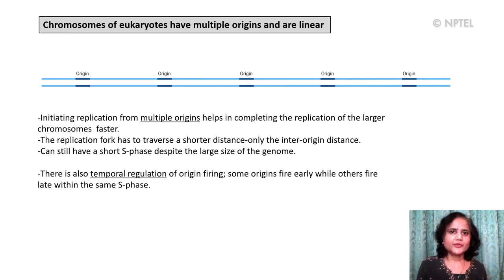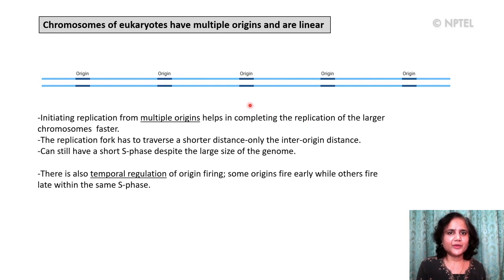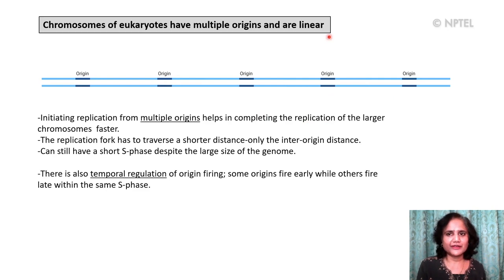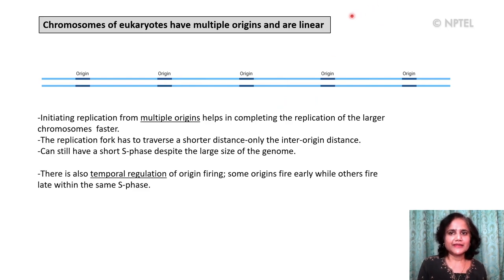The chromosomes of eukaryotes have multiple origins of replication and they are linear. Initiating replication from multiple origins helps in completing the replication of the large chromosomes faster. If there were only one origin, it would have to traverse a very large distance. With multiple origins, the replication fork only has to traverse the inter-origin distance, allowing the cell to still have a short S phase despite the large size of the genome.